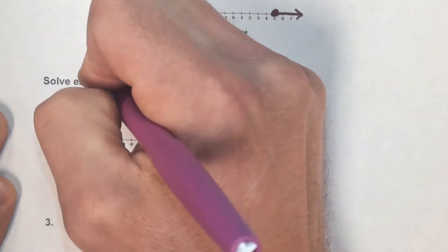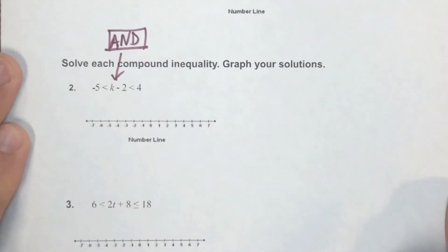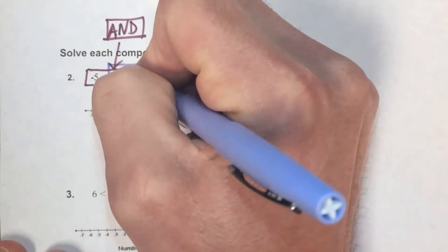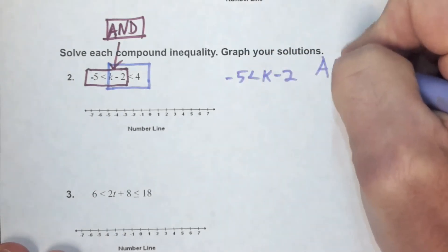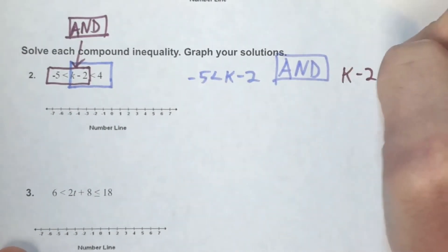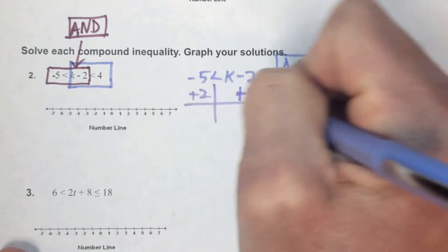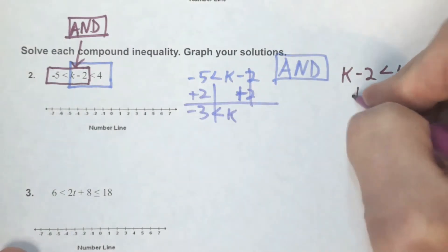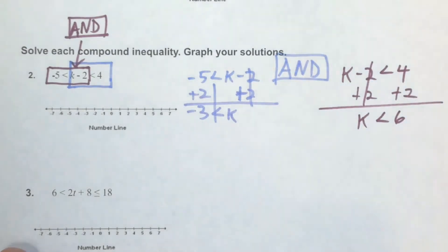Problem 2: the structure shown indicates an AND statement. Break it into two inequalities — negative five less than k minus two, and k minus two less than four. Solve each: add two to both sides of the first to get k greater than negative three. Add two to both sides of the second to get k less than six.